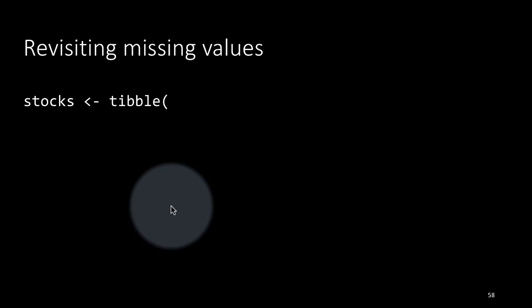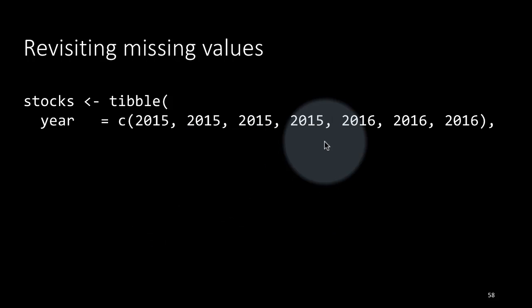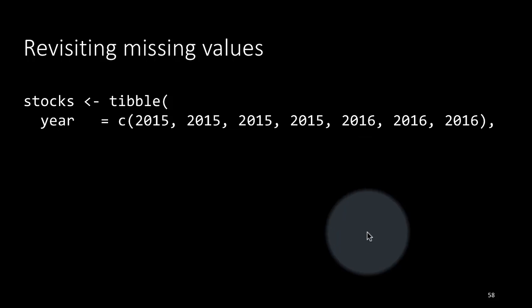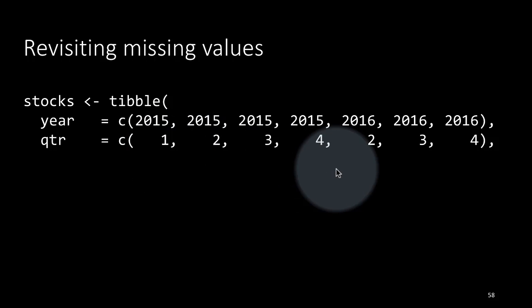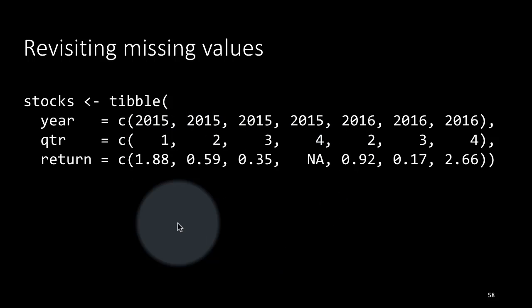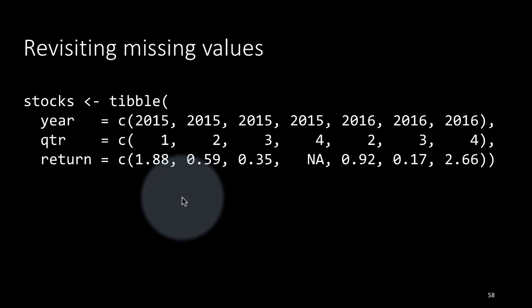Here we have a table called stocks with two years, 2015 and 2016, and for each year we've got the return for some quarters. The quarters are 1, 2, 3, 4 and we've got the stock return.